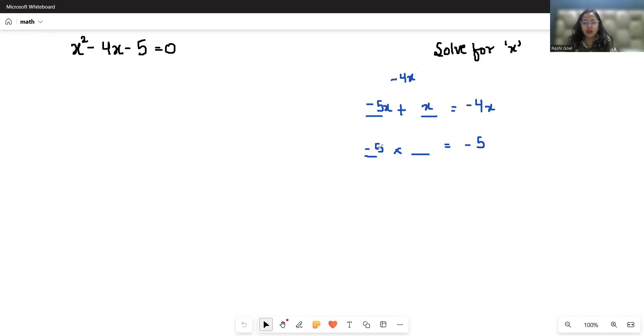This x is actually 1x. So let's write down -4x in terms of these two numbers: x² - 5x + x - 5 = 0. Now we have to take common factors.